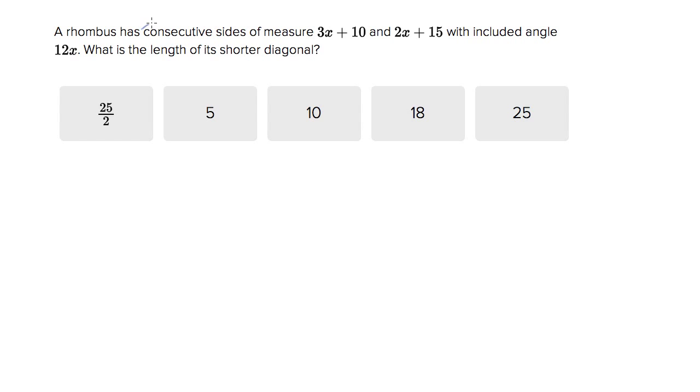So a rhombus has consecutive sides? I don't know what they mean by consecutive sides, but in a rhombus, all the sides have the same length, right? Much like a square, part of the definition of rhombus is all the sides have the same length.